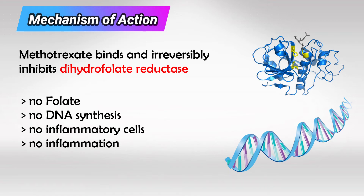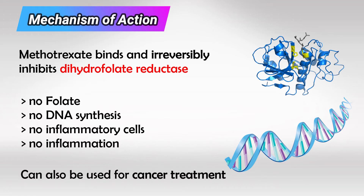It's very effective in treating rheumatoid arthritis, but because it inhibits DNA synthesis it can also be used to treat many cancers such as acute lymphoid leukemia, choriocarcinoma, and sarcomas, as well as ectopic pregnancy.